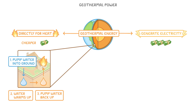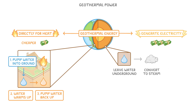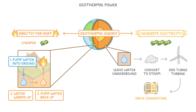In contrast, in order to generate electricity, we instead leave the water underground until it heats up so much that it's converted to steam. As this gaseous steam rises, the gas turns turbines, which drive the generators to produce electricity.